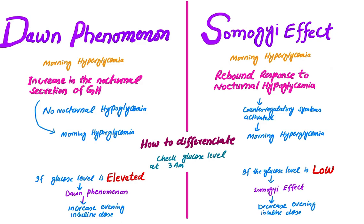Dawn Phenomenon and Somogyi Effect both usually occur in insulin deficiency in type 1 diabetes, but not in insulin resistance. Dawn Phenomenon usually occurs in everybody. It is a phenomenon in the dawn, between 2 a.m. and 8 a.m. There is a normal surge of hormones such as growth hormone and glucagon that leads to increased sugar levels, resulting in morning hyperglycemia with high fasting blood sugar.